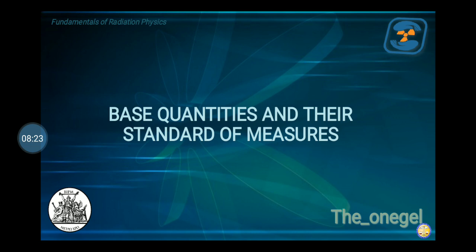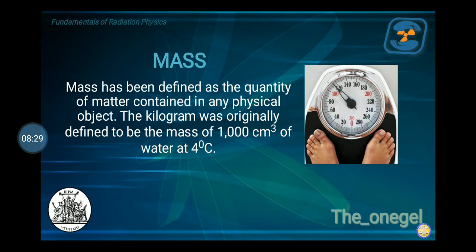We have the base quantities and their standard of measures. First, we have mass. Mass is different from weight — mass is constant here on Earth and even on the Moon, whereas weight varies according to the force of gravity. Mass is defined as the quantity of matter contained in any physical object. The standard unit of mass is the kilogram.